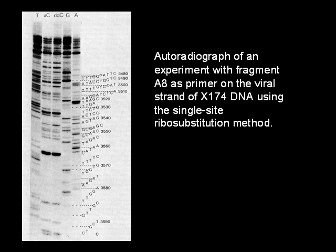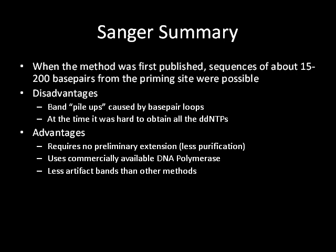One way this can be avoided is by single-stranded template substitution measures. For the summary of the Sanger method: when the method was first published, a sequence of about 15 to 20 base pairs from the primer site was possible. A disadvantage is pile-ups caused by base pair loops, and at the time it was hard to obtain all the ddNTPs. Advantages include that it requires no preliminary treatment, uses commercially available DNA polymerase, and involves less hazardous chemicals than other methods.